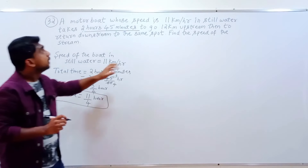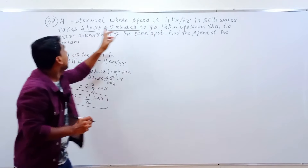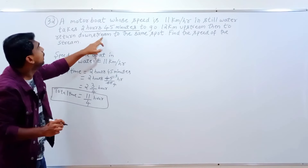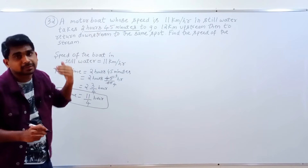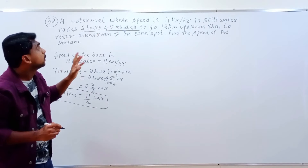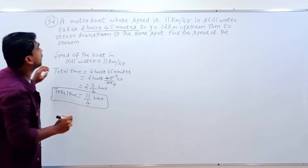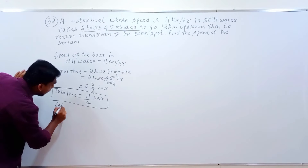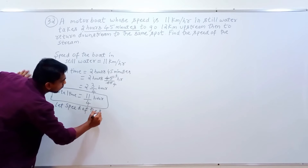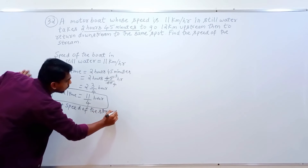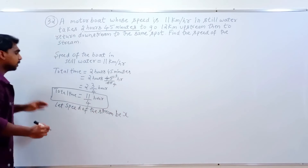This total time is for going 12 km upstream and then returning downstream to the same spot. What we need to find out is the speed of the stream. Let the speed of the stream be x.